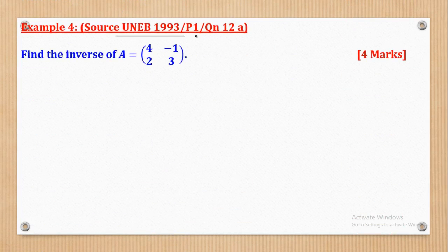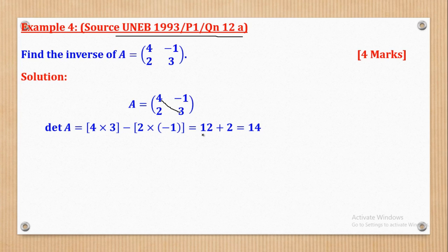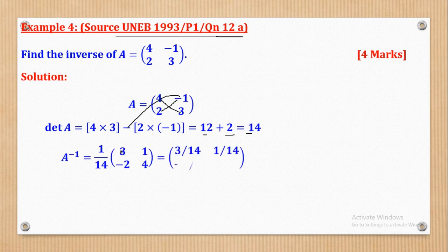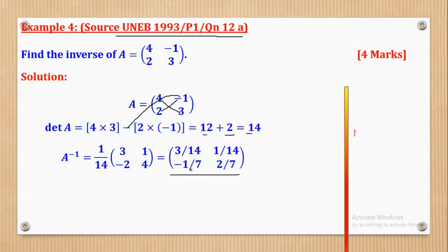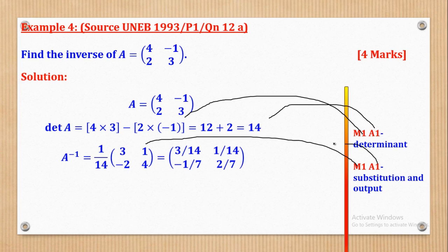Example 4 came from UNEB 1993, paper 1, question 12a. Find the inverse of A = [4, -1, 2, 3]. The determinant is: product of major diagonal is 12, minus product of minor diagonal — the two negatives give a positive 2 — so 12 plus 2 gives 14. The inverse is 1 over 14 multiplied by the adjoint matrix [3, 1, -2, 4]. M1 for substitution, A1 for determinant, M1 for adjoint substitution, A1 for the inverse.